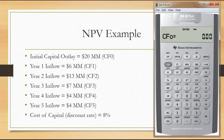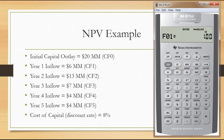Let's enter our cash flows. The first cash flow is twenty million dollars — this is a negative amount. We hit enter, stored as cash flow number zero: negative twenty million dollars. Hit the down arrow to get to cash flow year one: six million dollars. We hit enter, then hit the down arrow. This brings us to F01, which represents the frequency — the six million dollars only happens once in a row, so we leave F01 as one and hit enter.